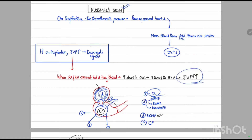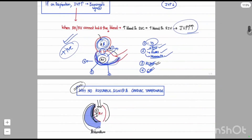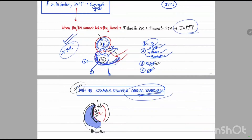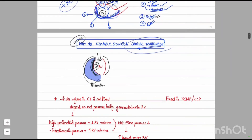Kussmaul's sign can occur whenever there is already high blood present in the right atrium or right ventricle, such as in right heart failure, right ventricular MI, or massive pulmonary embolism. It also occurs if the myocardium of the right ventricle is less compliant, as in restrictive cardiomyopathy, or if the pericardium is not compliant, as in constrictive pericarditis. However, an important exception is cardiac tamponade — in which the right ventricle cannot hold blood, yet Kussmaul's sign is absent.